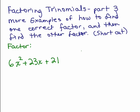First of all, we want to use the idea of the product and sum, and the product comes from the first coefficient times the constant at the end. So 6 times 21 is 126, and the sum is the middle term, which is 23. Both of these are positive, so our two numbers are both going to be positive in this case.